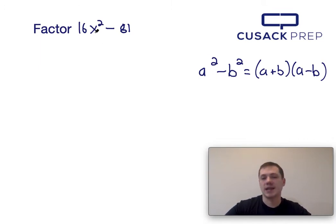So if a squared equals 16x squared, taking the square root of both sides will tell us that a is 4x, and if b squared is 81, that would tell us that b is 9 by taking the square root of both sides.